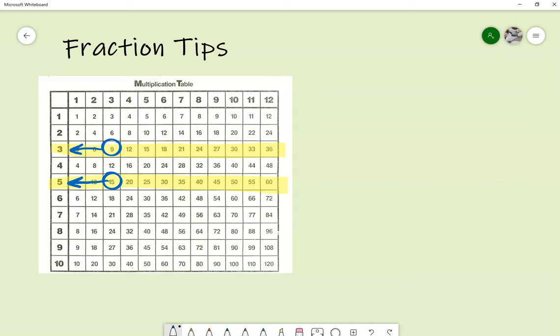Or if I needed to increase that fraction, I can do the same thing in a different row. Let's say I had 56 over 72 and I can go back here and see that that's equal to 7 over 9.